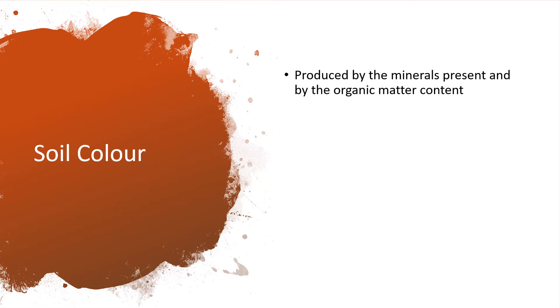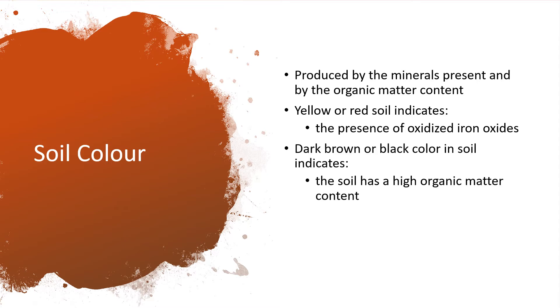This soil color usually is produced by the minerals present in the soil and also by the organic matter content. If the soil is more yellowish or red, that indicates the soil contains oxidized ions. And if it is dark brown or black in color, it usually indicates that the soil has high amount of organic matter.